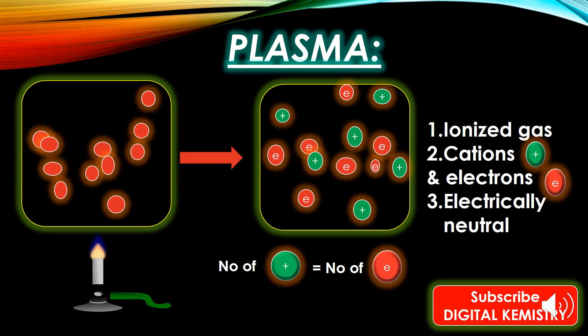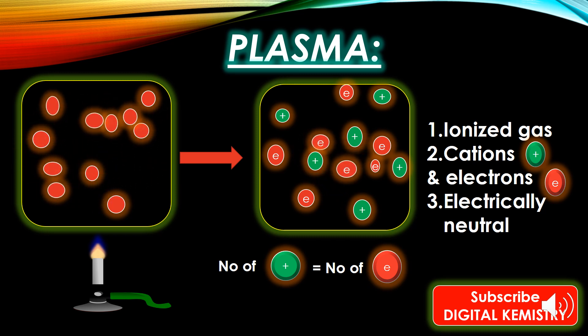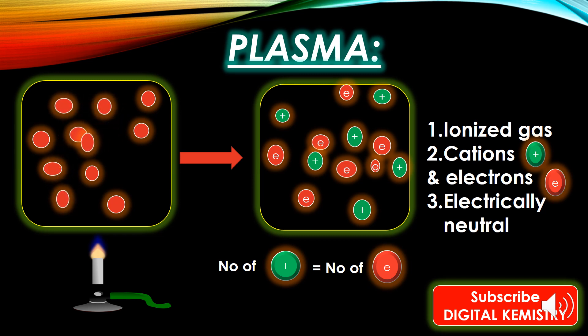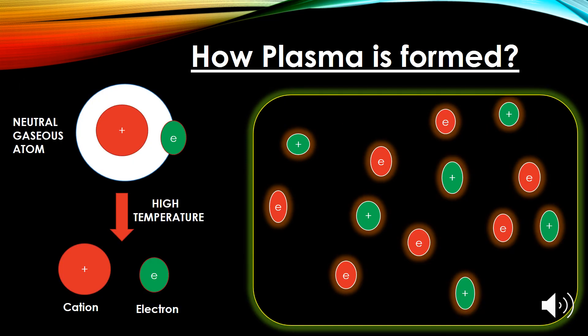About 99% of the universe is in the plasma state. Unlike the other three states of matter — solid, liquid, and gas — plasma does not exist freely on the Earth's surface under normal conditions and must be artificially generated from neutral gases. Simply put, it is the state of matter that consists of ionized gases.